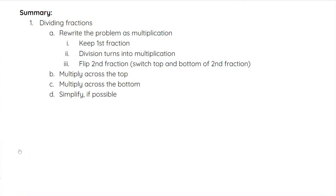So in summary for dividing fractions, we rewrite the problem as multiplication by keeping the first fraction, changing the division into multiplication, and then we flip the second fraction. We switch the top and the bottom of that second fraction. Once we've done that, we multiply like normal with fractions. We multiply across the top and across the bottom, and we always want to simplify if possible.